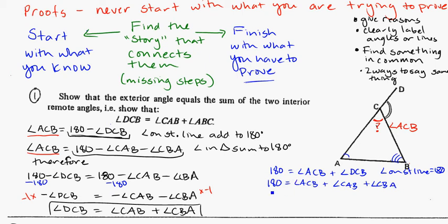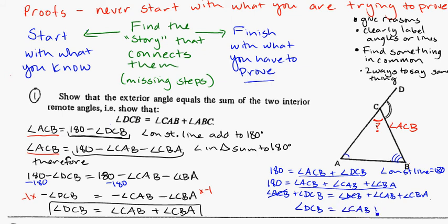So same idea, I can say angle ACB plus DCB is equal to angle ACB plus angle CAB plus angle CBA. Setting these two equations equal to each other because they're both equal to 180. And here, I have angle ACB on both sides so those can cancel and I'm left with angle DCB is equal to angle CAB plus angle CBA. So, just write here angles in triangle equal 180.